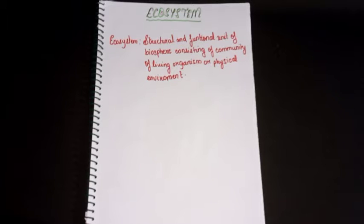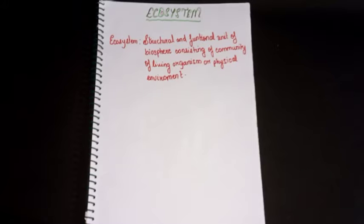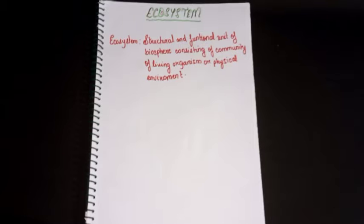In an ecosystem, each organism has its own role to play. Even the smallest bacteria has its own part, and everything is important for the ecosystem to survive. All living organisms — including plants, animals, and microorganisms — are interdependent. One animal is dependent on one plant, and one plant is also dependent on one animal.